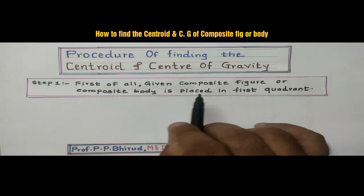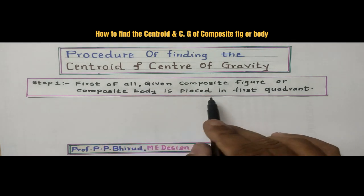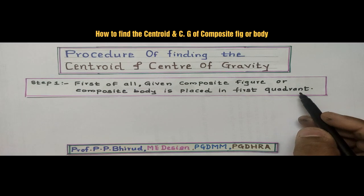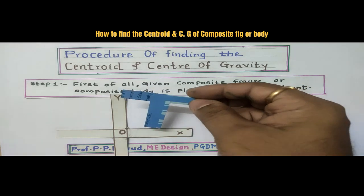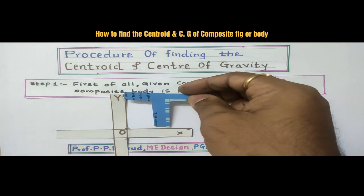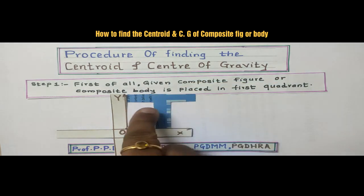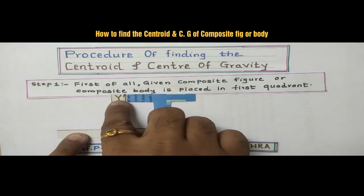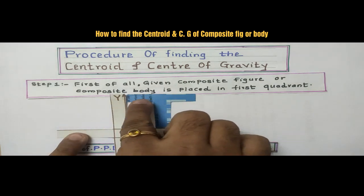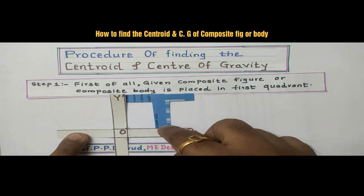So, your first step is: first of all, the given composite figure or composite body is placed in the first quadrant. This composite figure is considered in the first quadrant — this is our first quadrant. The figure touches its extreme left side to the y-axis and extreme bottom side to the x-axis.